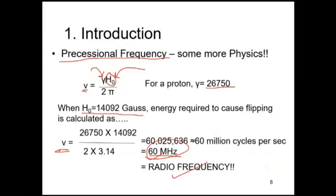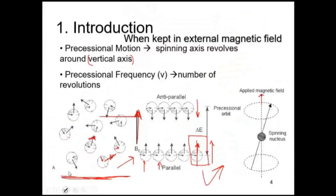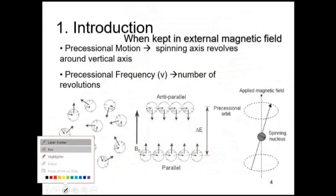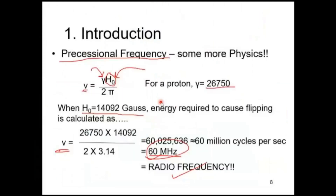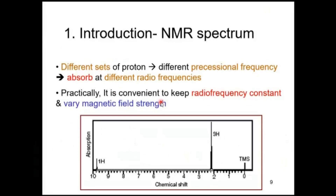To excite a proton from the ground state we require energy equivalent to a radio frequency of 60 MHz. So if electromagnetic radiation with energy equivalent to 60 MHz is applied to a nucleus having a single proton, the proton will flip — it will change the direction of spinning. When it falls back to the ground state it will again release energy, and if we can measure that energy we can obtain an NMR spectrum.